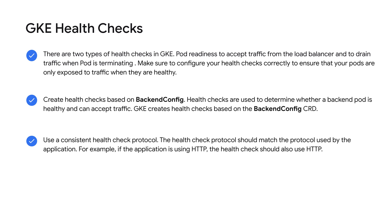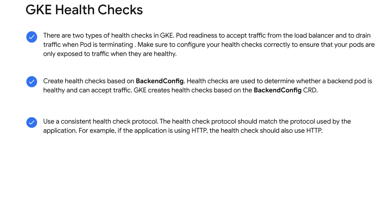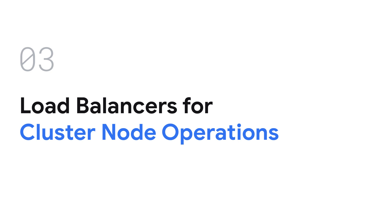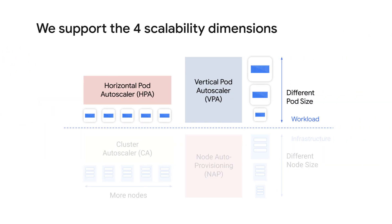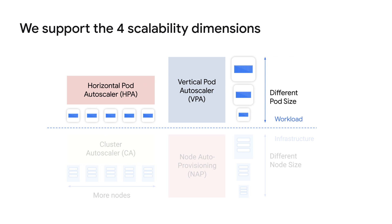To summarize, load balancing and health checks work together to seamlessly distribute traffic. Next, let's explore cluster node operations and the best load balancer type to be used for each case. There are four different scaling operations available for clusters: Horizontal Pod Autoscaler, Vertical Pod Autoscaler, Cluster Autoscaler, and Node Autoprovisioning.